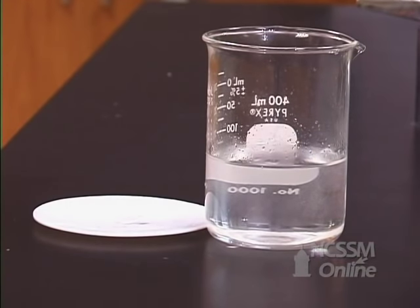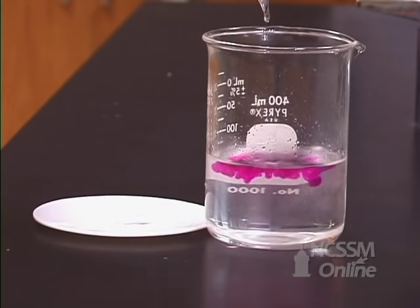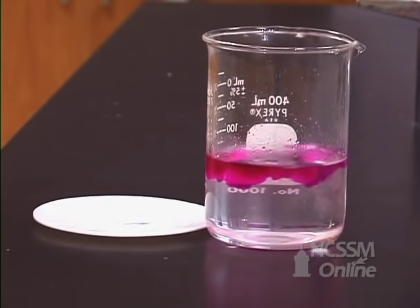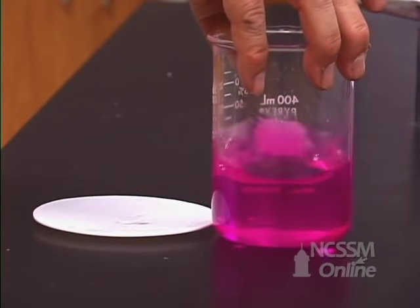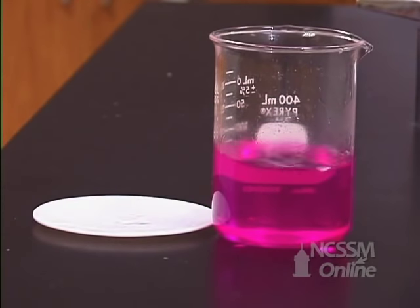We can test that the lithium hydroxide has been produced by adding an acid-base indicator. If we add some phenolphthalein, phenolphthalein is colorless in acid and red or purple in base. We can tell that the solution is basic due to the formation of the lithium hydroxide.